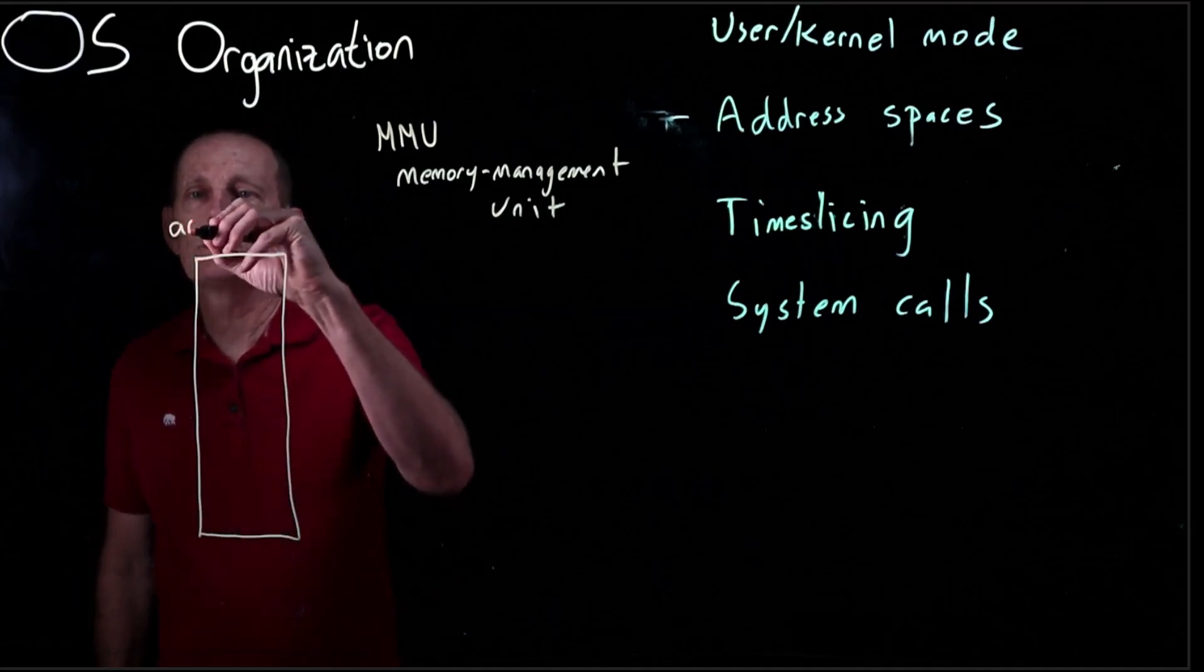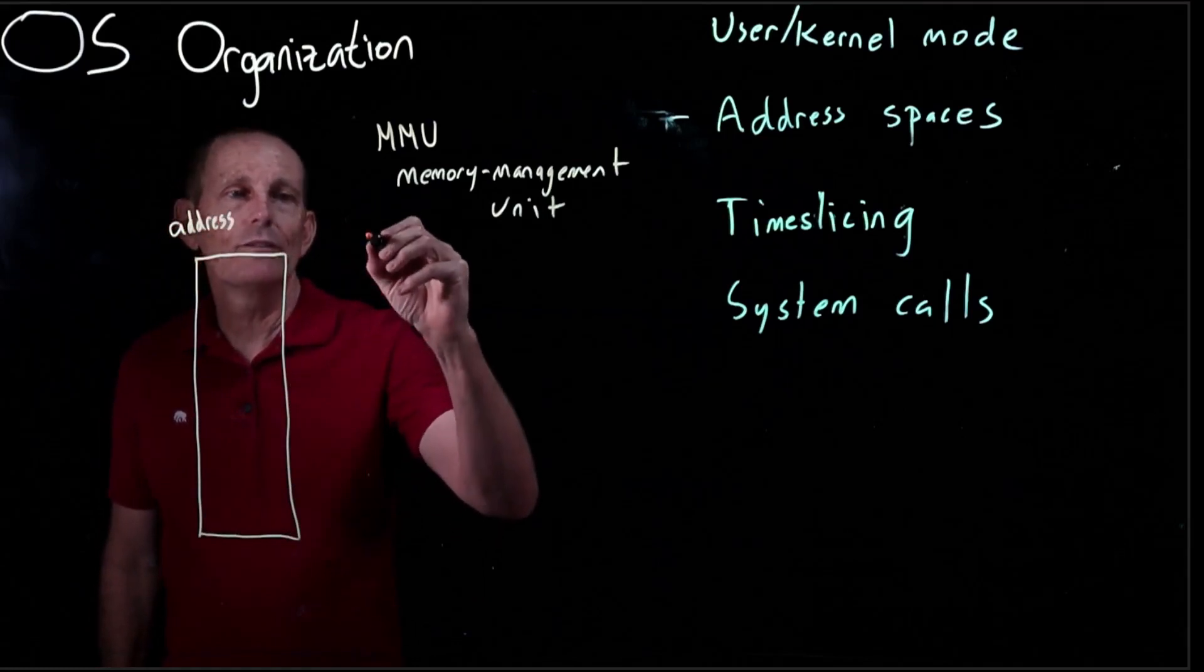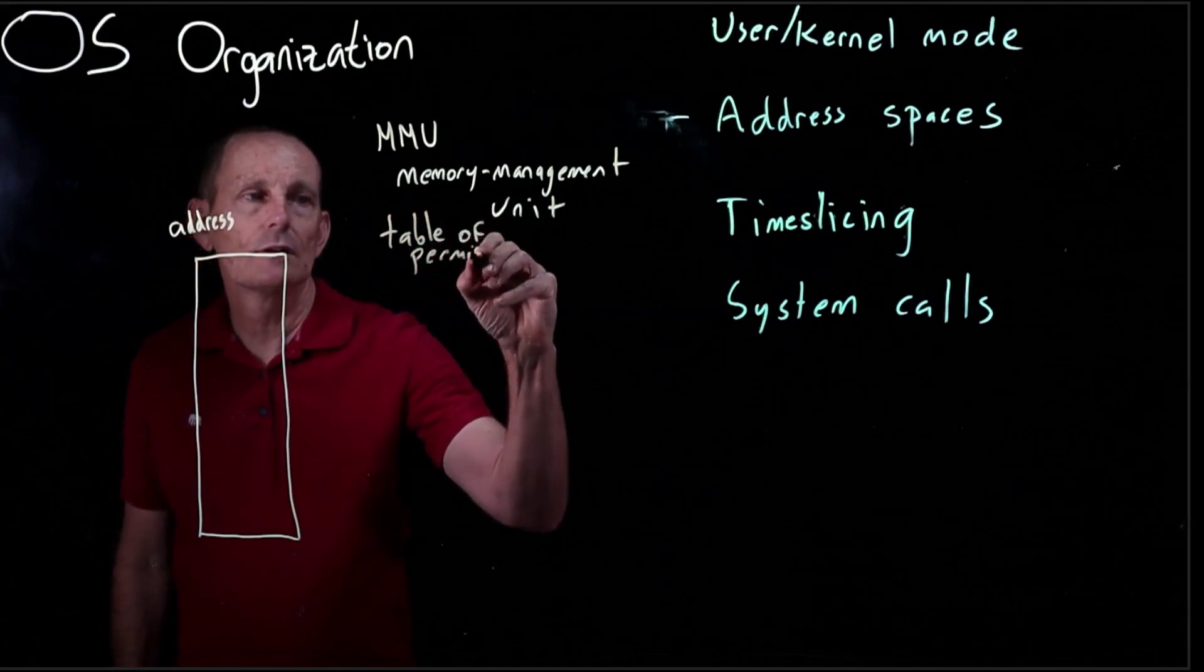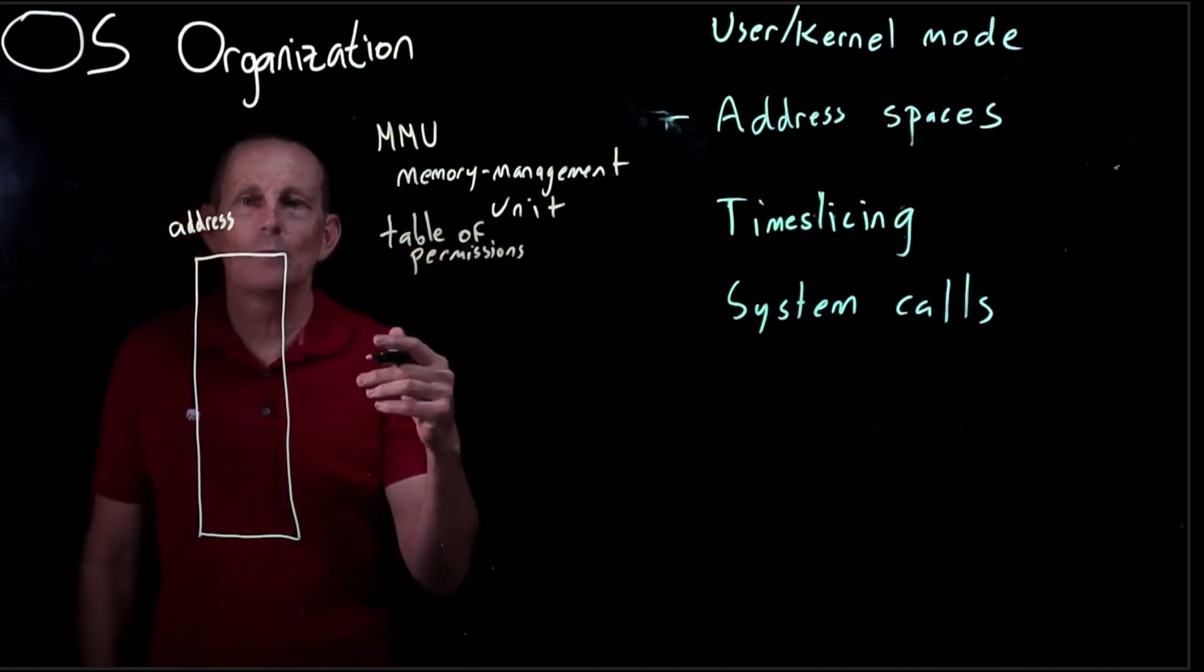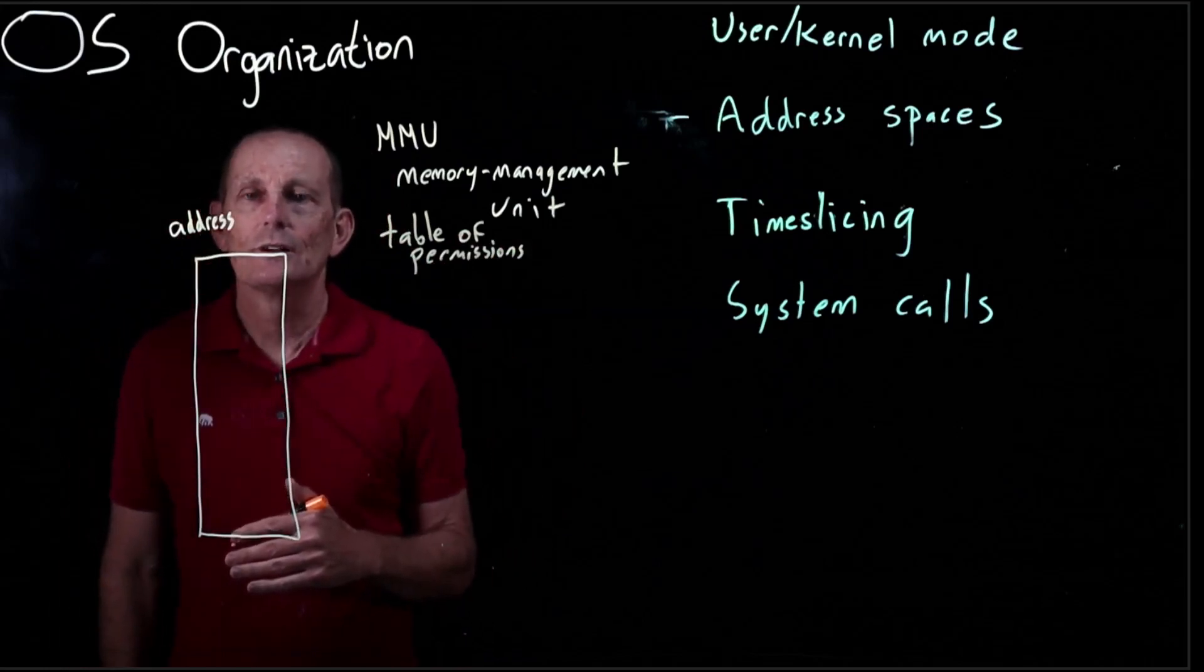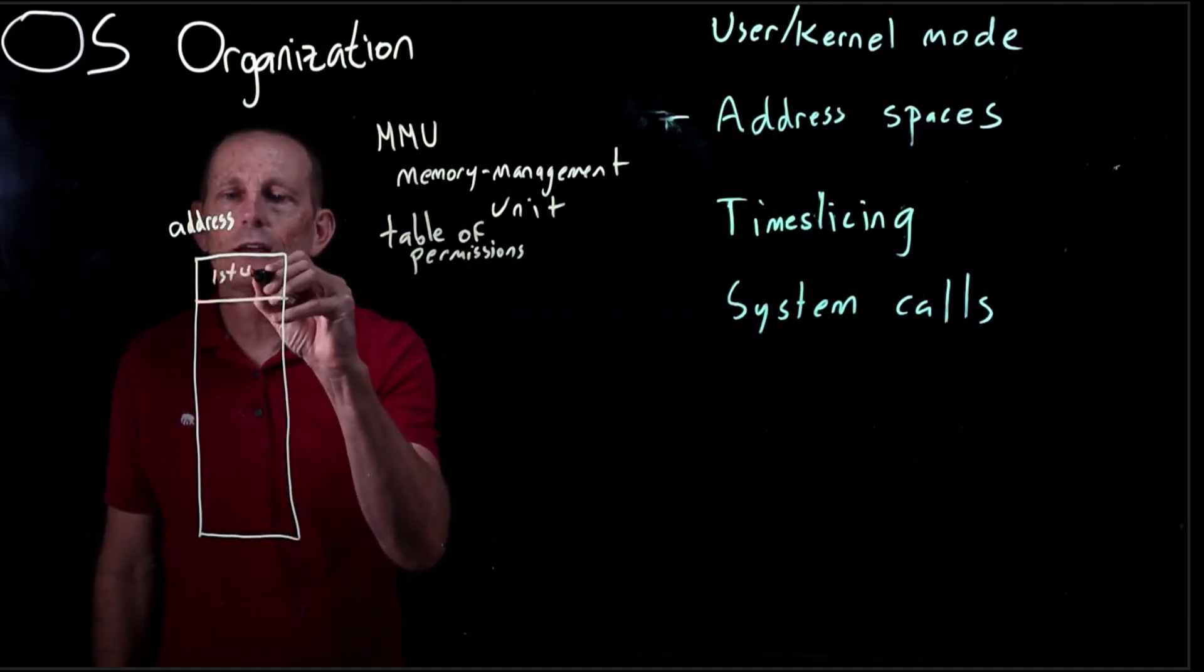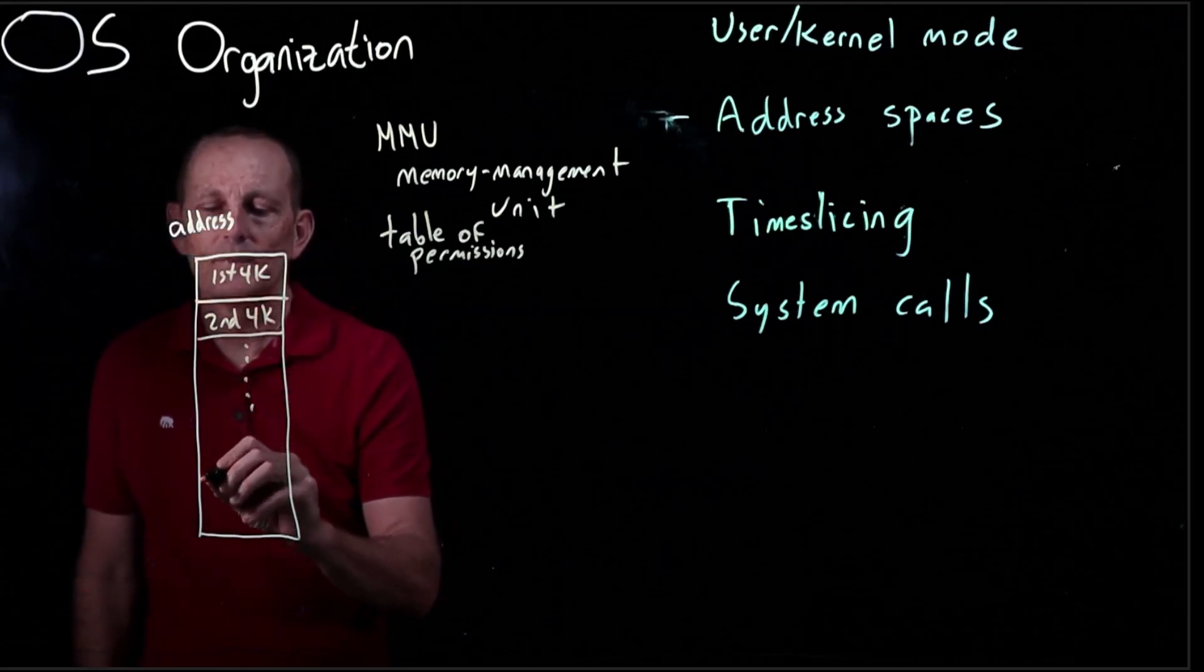We have our addresses. And then we have a table of permissions. So rather than having this table for every single address in memory, we're going to go ahead and block it into 4K chunks. So this is the first 4K, the second 4K, and on and on.